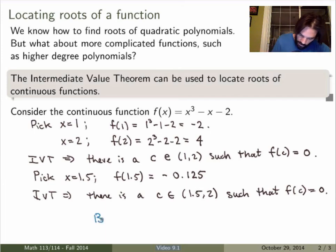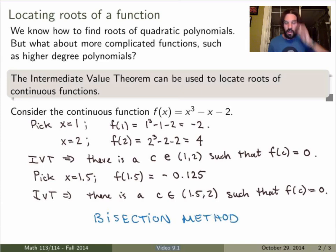Now this method is something called a bisection method. It's a very effective way of finding roots of continuous functions, and you can implement that numerically on a computer, and then you can find better and better approximations of the roots. So we'll study that in more detail in class. That was just to give you an idea of how you can use the IVT to solve problems.